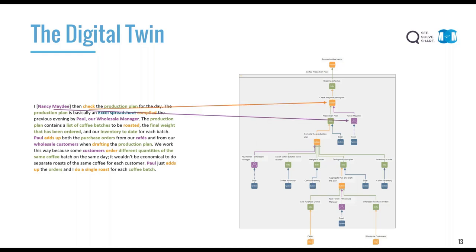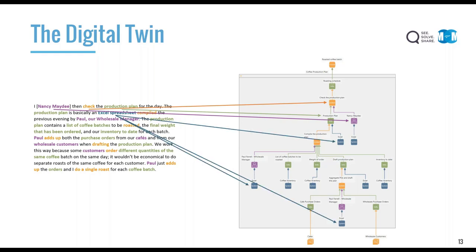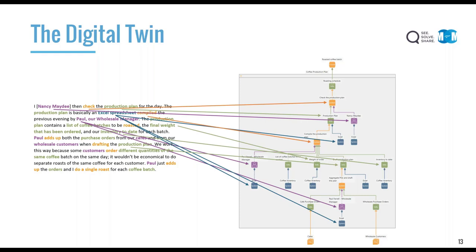Here's Nancy. This is the check action she performs, which requires the production plan — she needs the production plan in Excel to perform her work. Here's Excel, the system being used by Nancy and also the container of some of this content. Here's the compile work that Paul does — here's Paul. We can see the final weight piece of information that's needed, the inventory, the production plan that's created, and here's the add action for Paul.